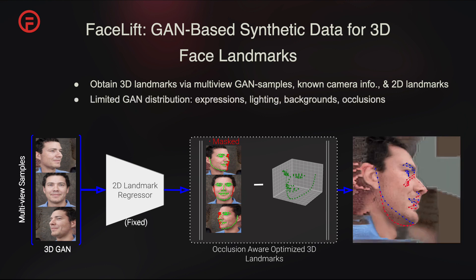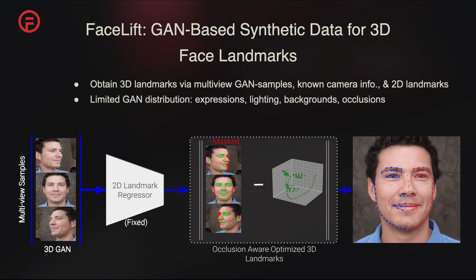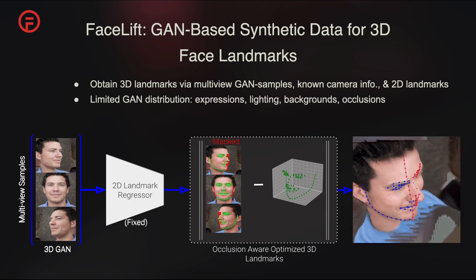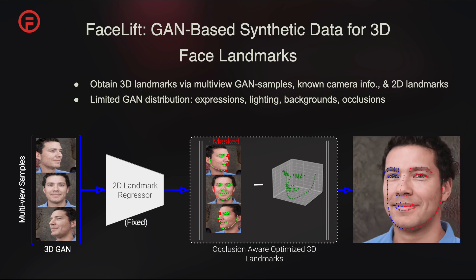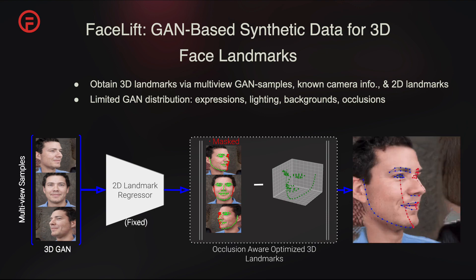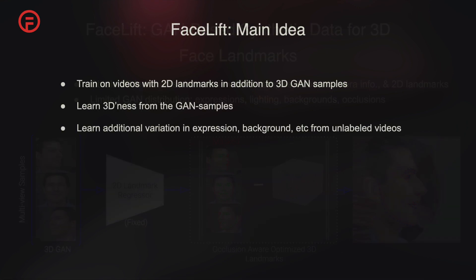However, training on this data alone yields suboptimal results due to the GAN's limitedness in expression, lighting, and occlusion variations. Thus, we propose to train jointly on 2D unlabeled videos alongside the GAN data, where the 3D structure is learned from the GAN samples, while additional variation in expression, background, occlusion, etc., is gleaned from the videos.